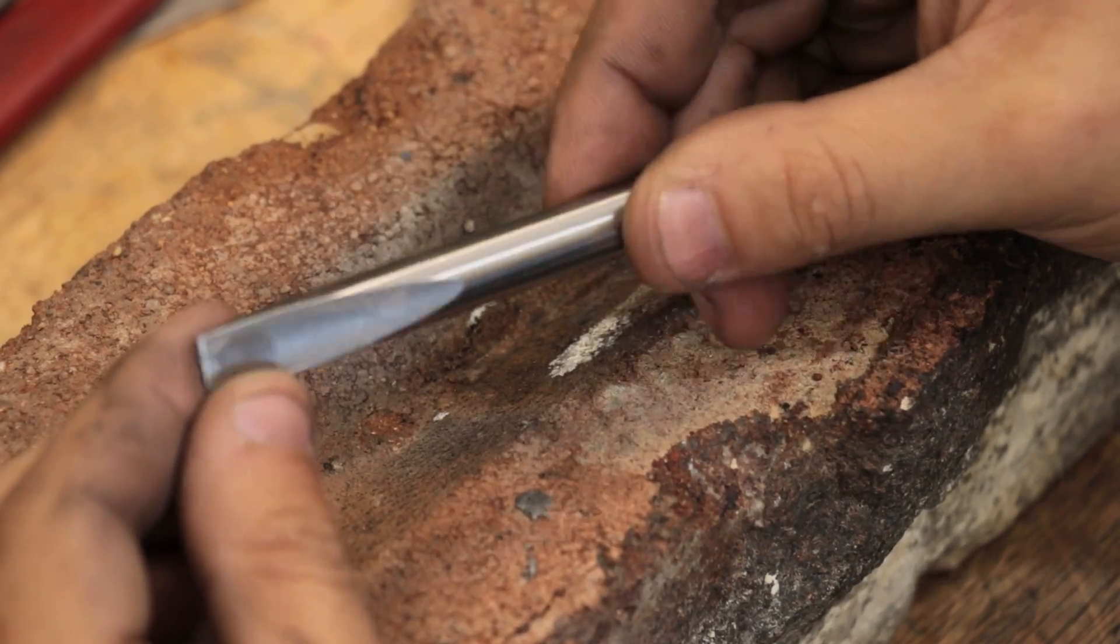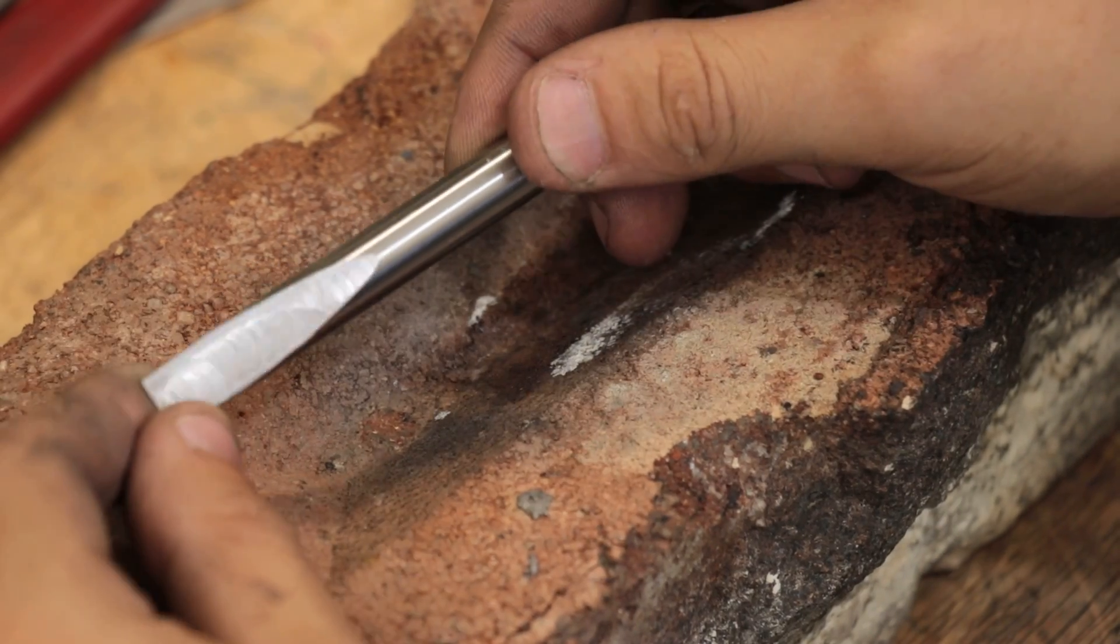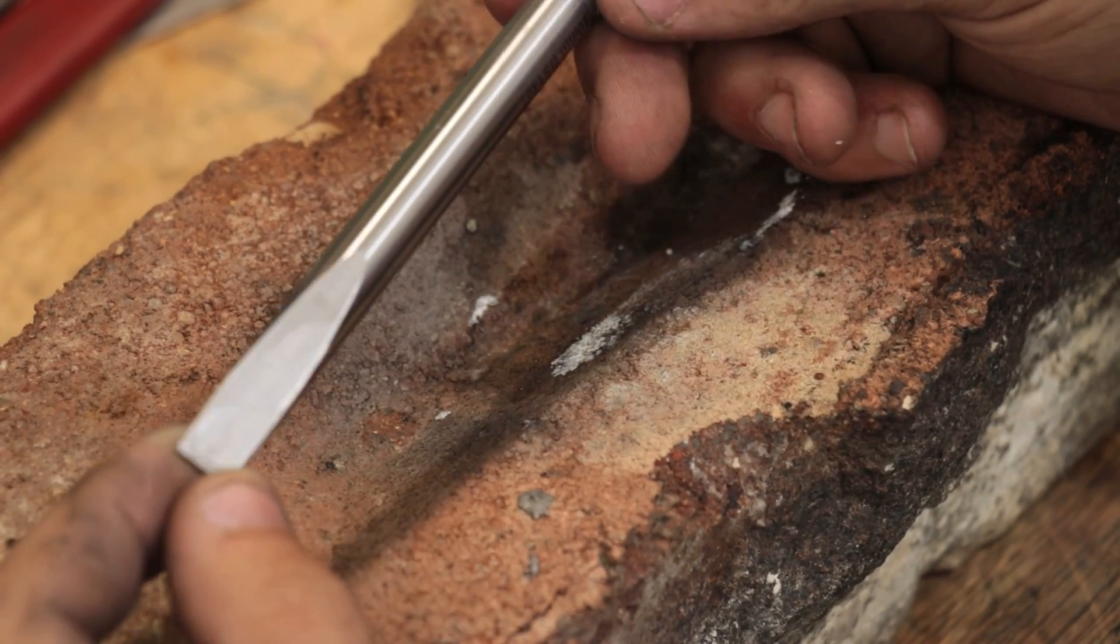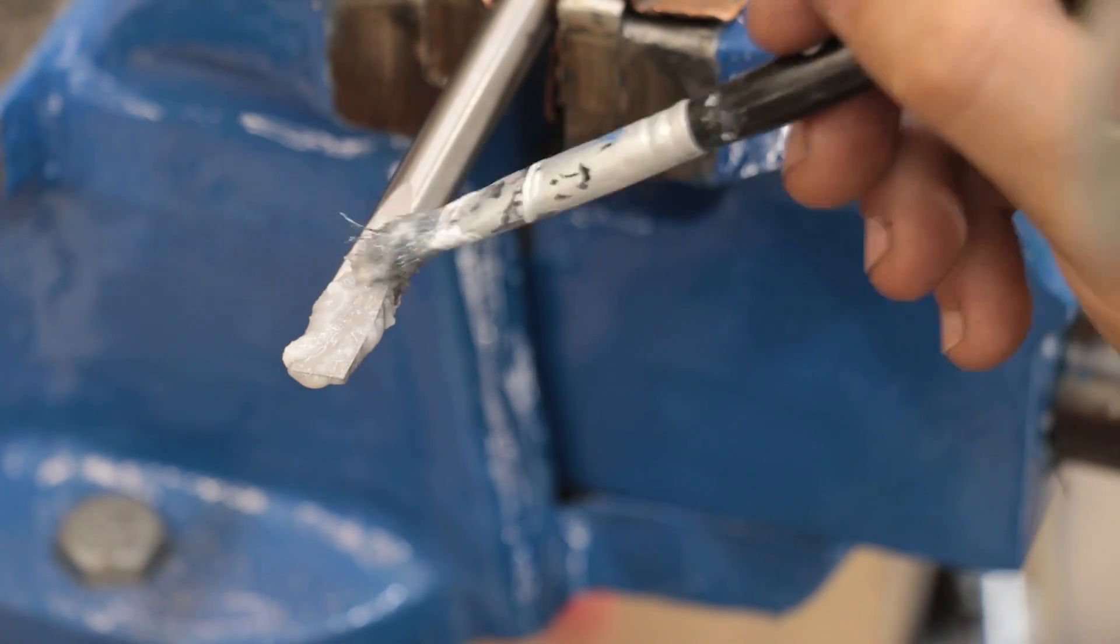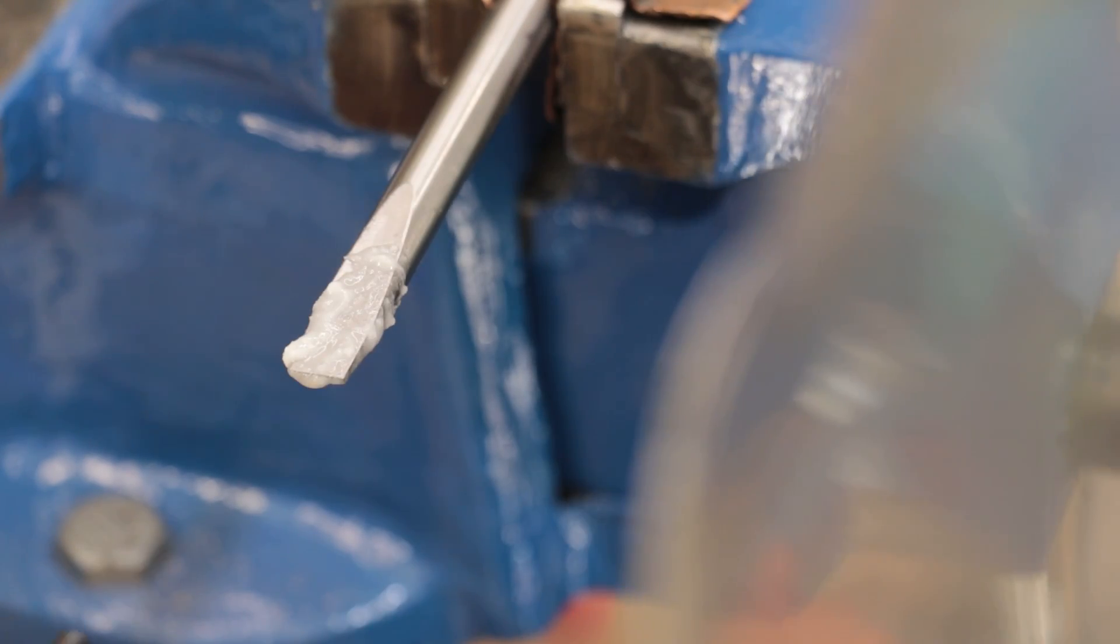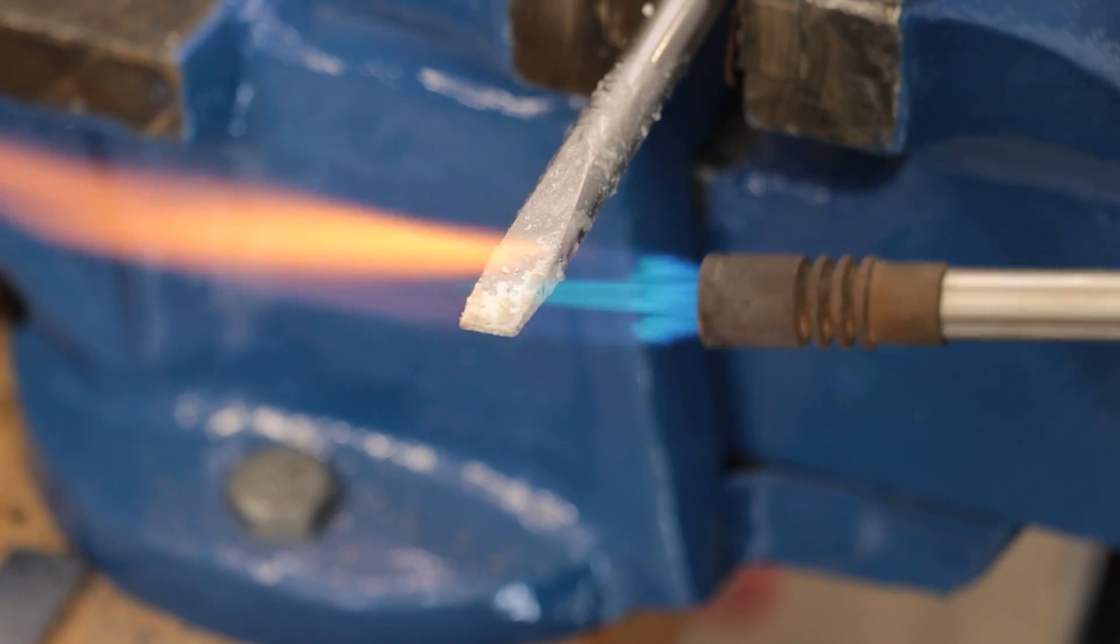With the tip machined I can now harden it and it's the only part that's going to need heat treatment. A bit of flux will help prevent oxidation at high temperatures and then I'll heat the part until it becomes non-magnetic.